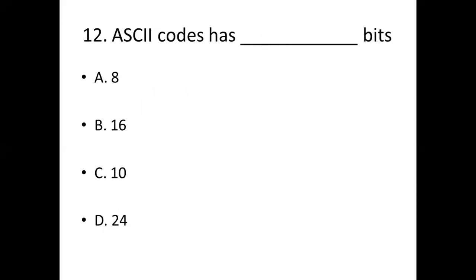Twelfth bit: ASCII codes has dash bits. Option A: 8. Option B: 16. Option C: 10. Option D: 24. Answer: Option A, 8 bits.